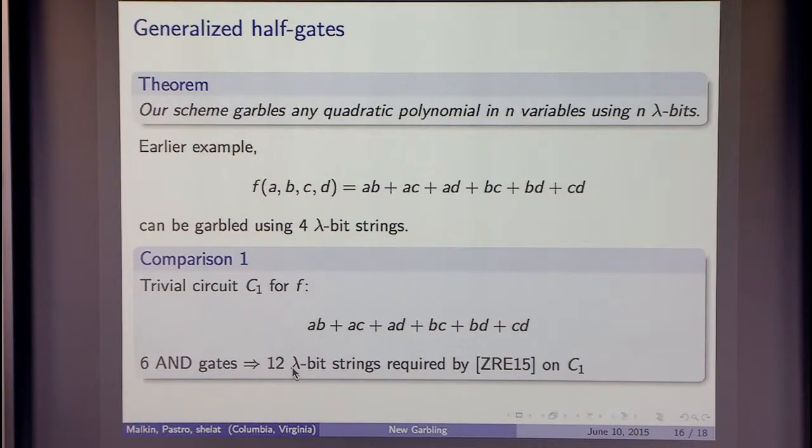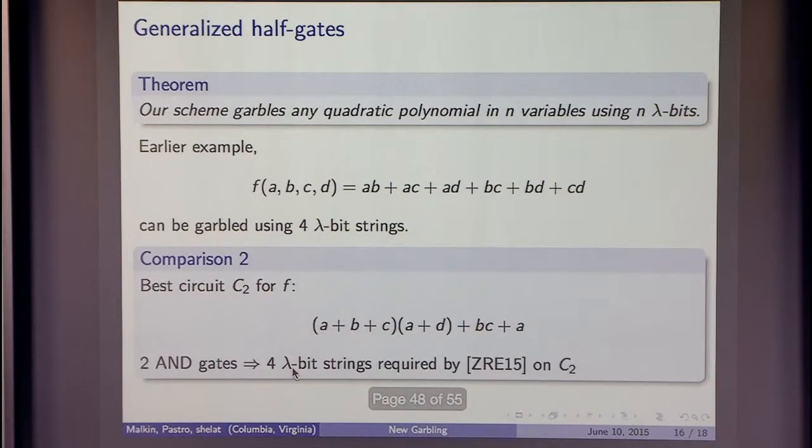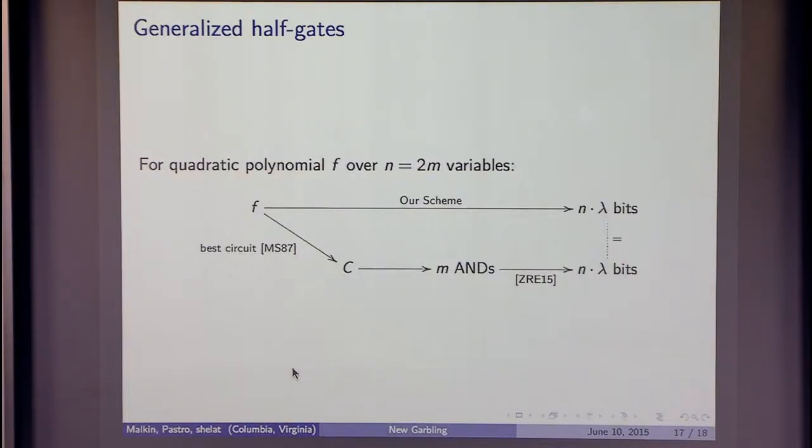However, you can optimize the circuit. So you can have a circuit with just two ANDs, and then you get exactly the same complexity. So that's kind of interesting. In general, for a quadratic polynomial, there is a paper by Mirwald and Schnoor that says that in a worst-case scenario, you can take a polynomial of degree 2 in n variables and just use m AND gates, where m is the number of variables divided by 2, which shows that the performance of our scheme and the half-gate via this best circuit is the same.